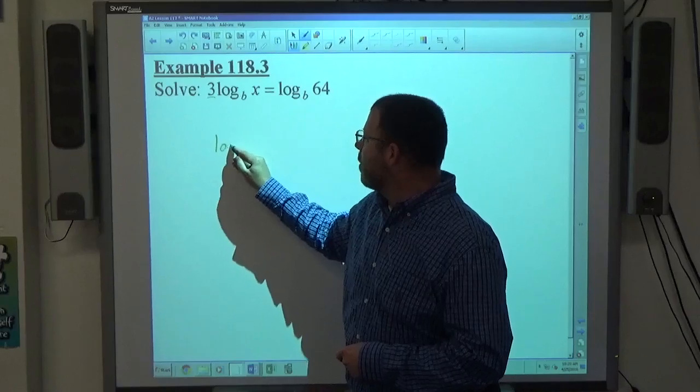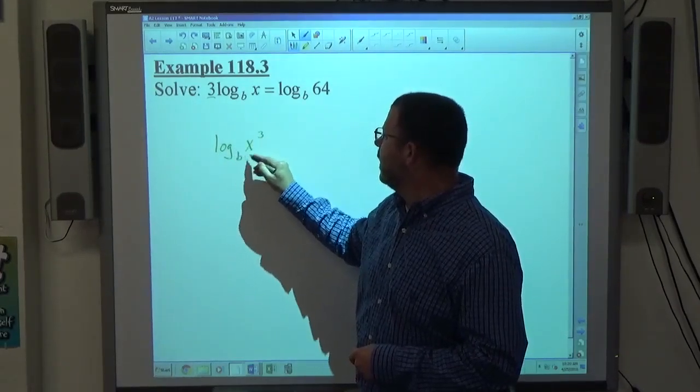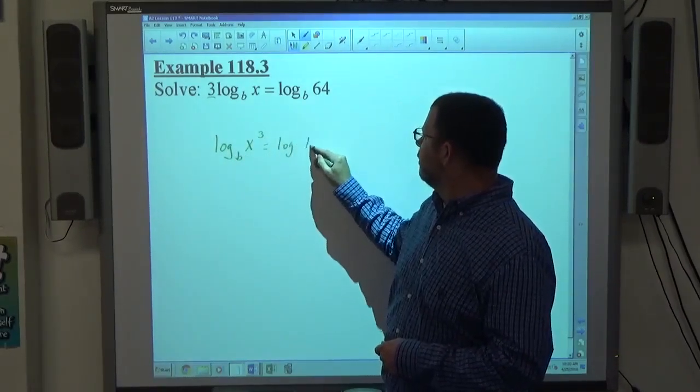Number in front of a logarithm becomes a power. So log of x cubed base b equals log of 64 base b.